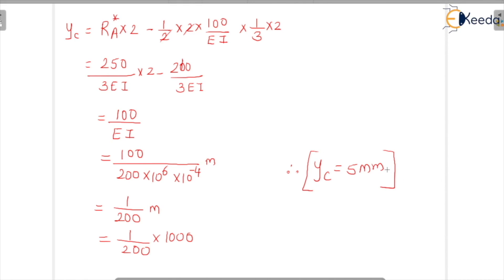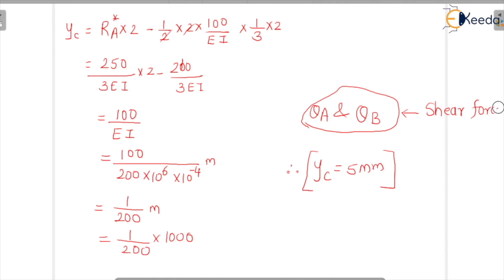So for this problem we have calculated the slope at both supports — theta A and theta B — and the deflection Yc = 5 mm under the load. Remember: in the conjugate beam method, slope corresponds to shear force and deflection corresponds to bending moment. Hope you understood this question. Thank you for listening.